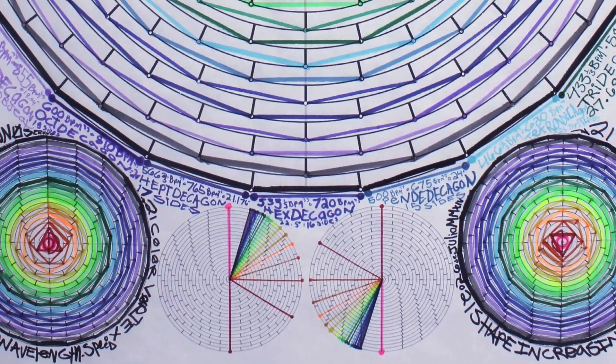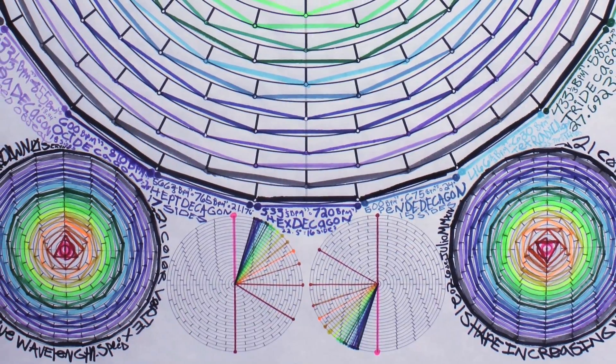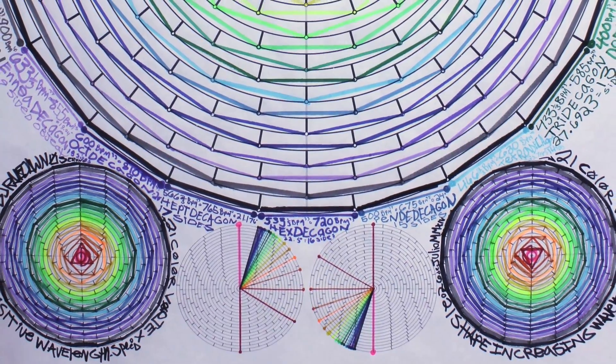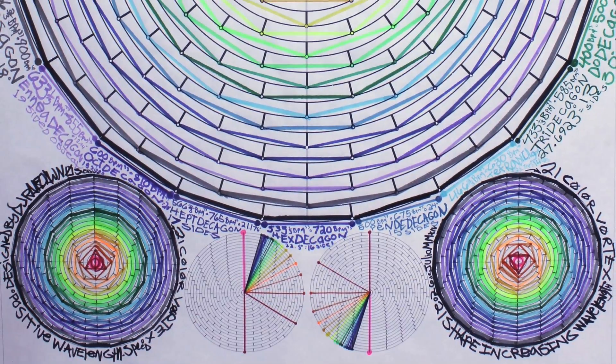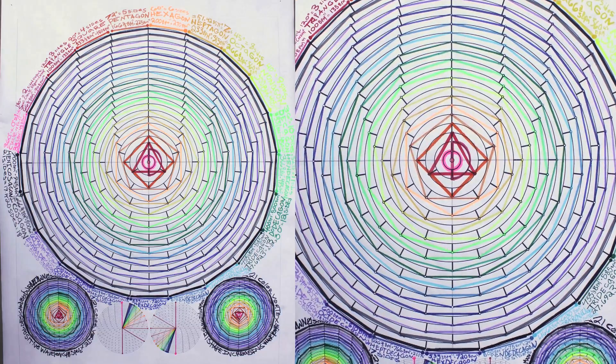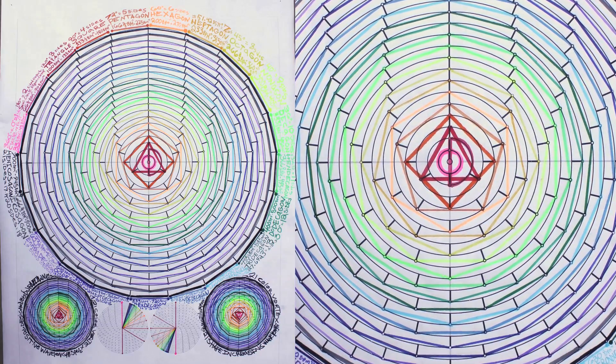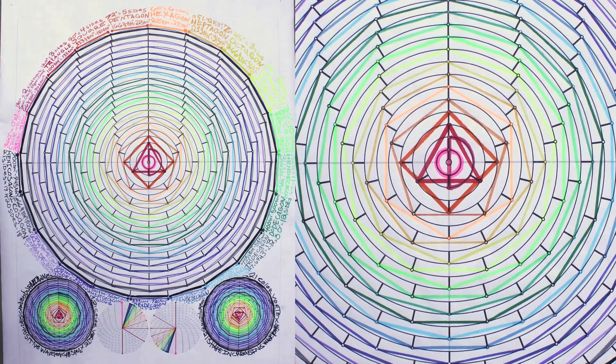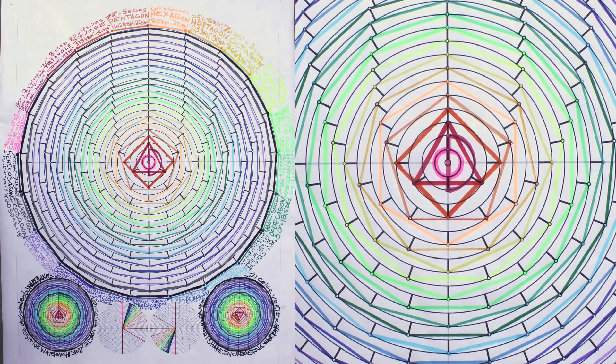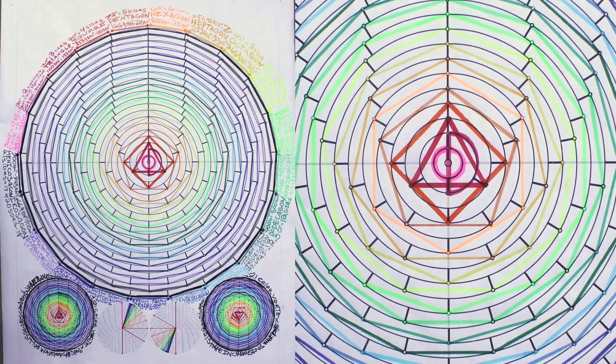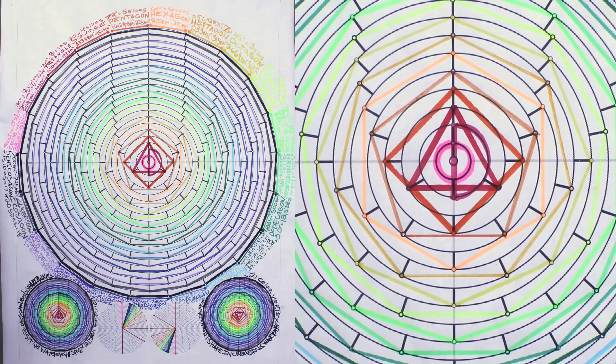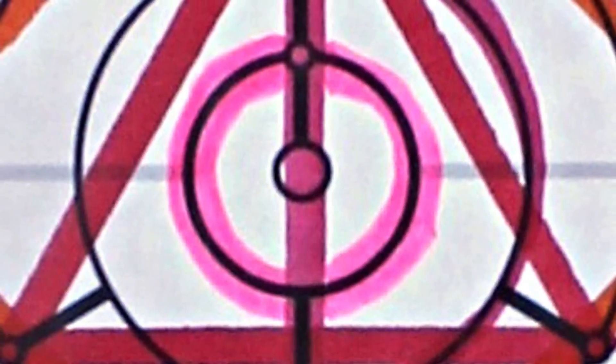21 Color Geometric BPM Vortex W over D Positive Wavelength Dimensional Expansion, 36 by 48 inches, marker on gridded paper, 7-26-14 CE. 1 Circle equals 45 BPM at 45 RPM equals 33.3 BPM at 33.3 RPM.